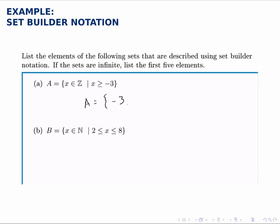It starts at negative 3 and then goes up from there. So negative 2, negative 1, 0, 1, and that's enough to see the pattern.